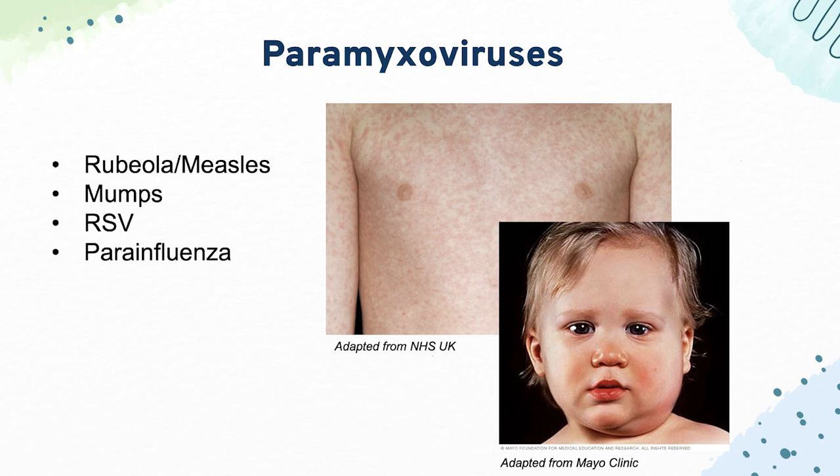For RSV, they often ask how you treat or prevent it — the answer is palivizumab, a monoclonal antibody. Then finally, we have parainfluenza, which causes croup, marked by a barking cough and inspiratory stridor.